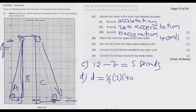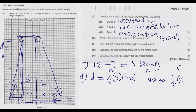For area A, it's a triangle with base 3 and height 40, so it's half times 3 times 40. Plus area B, a rectangle: width is 7 minus 3 equals 4, height is 40, so 4 times 40. Plus area C, a triangle from 7 to 12, base 5 times height 40, giving half times 5 times 40.